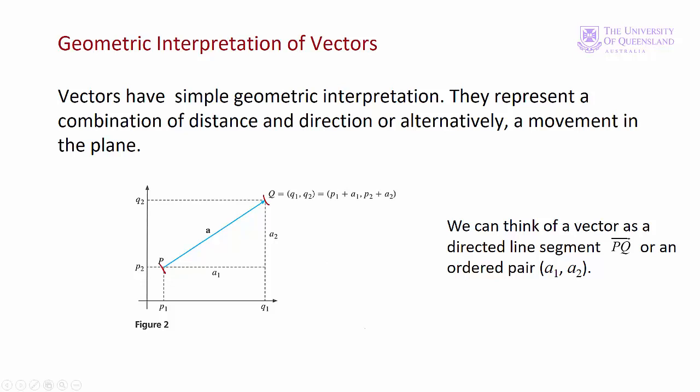Starting at point P, the movement is A1 in the X direction and then A2 in the Y direction. So the point Q with coordinates Q1, Q2 is equal to P1 plus A1, P2 plus A2.